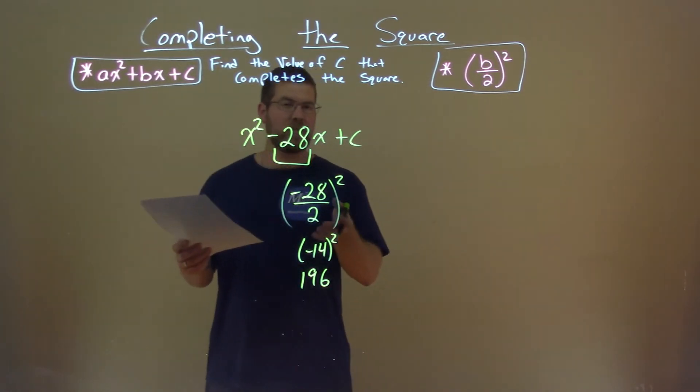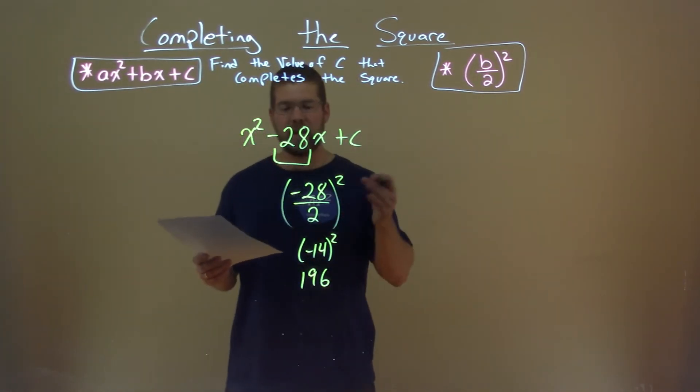And so there we have it. That is our c value. That is the value of c that completes the square.